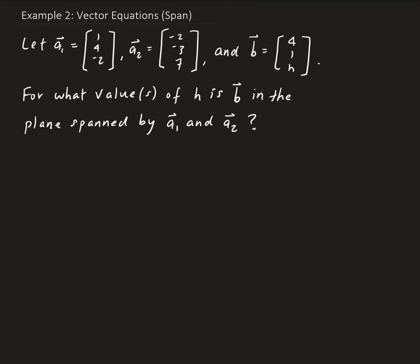In this example, we want to determine for what values of h the vector b is in the plane spanned by the vectors a1 and a2. There's a key word here: span. If we say that a vector belongs to the span of a set of vectors, it means that vector can be represented as a linear combination of those vectors in that span.